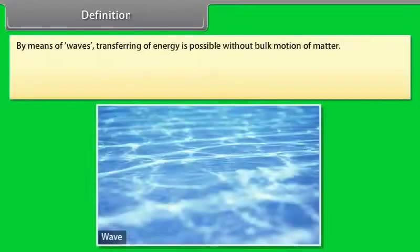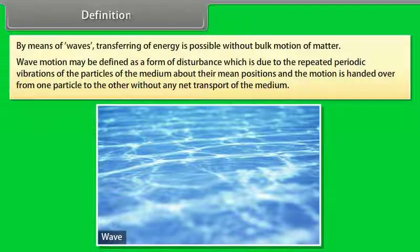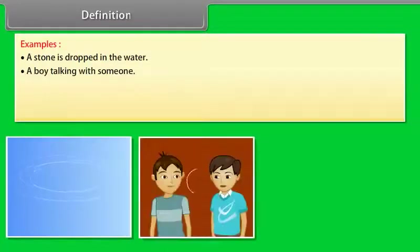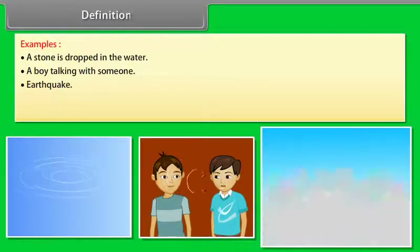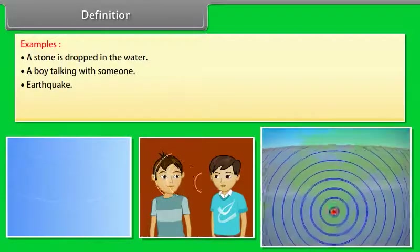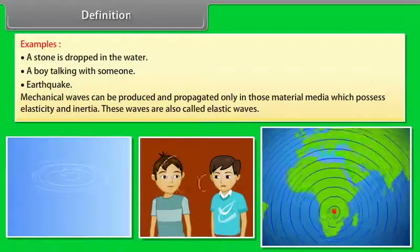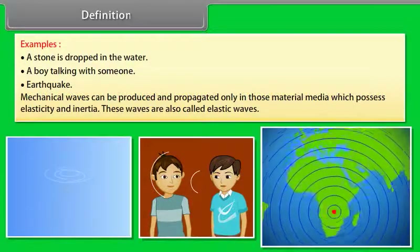Definition: By means of waves, transferring of energy is possible without bulk motion of matter. Wave motion may be defined as a form of disturbance which is due to the repeated periodic vibrations of the particles of the medium about their mean positions, and the motion is handed over from one particle to the other without any net transport of the medium. A stone dropped in water, a boy talking with someone, and earthquakes are some examples of wave motion. In this chapter, we shall study about mechanical wave motion. Mechanical waves can be produced and propagated only in those material media which possess elasticity and inertia. These waves are also called elastic waves.